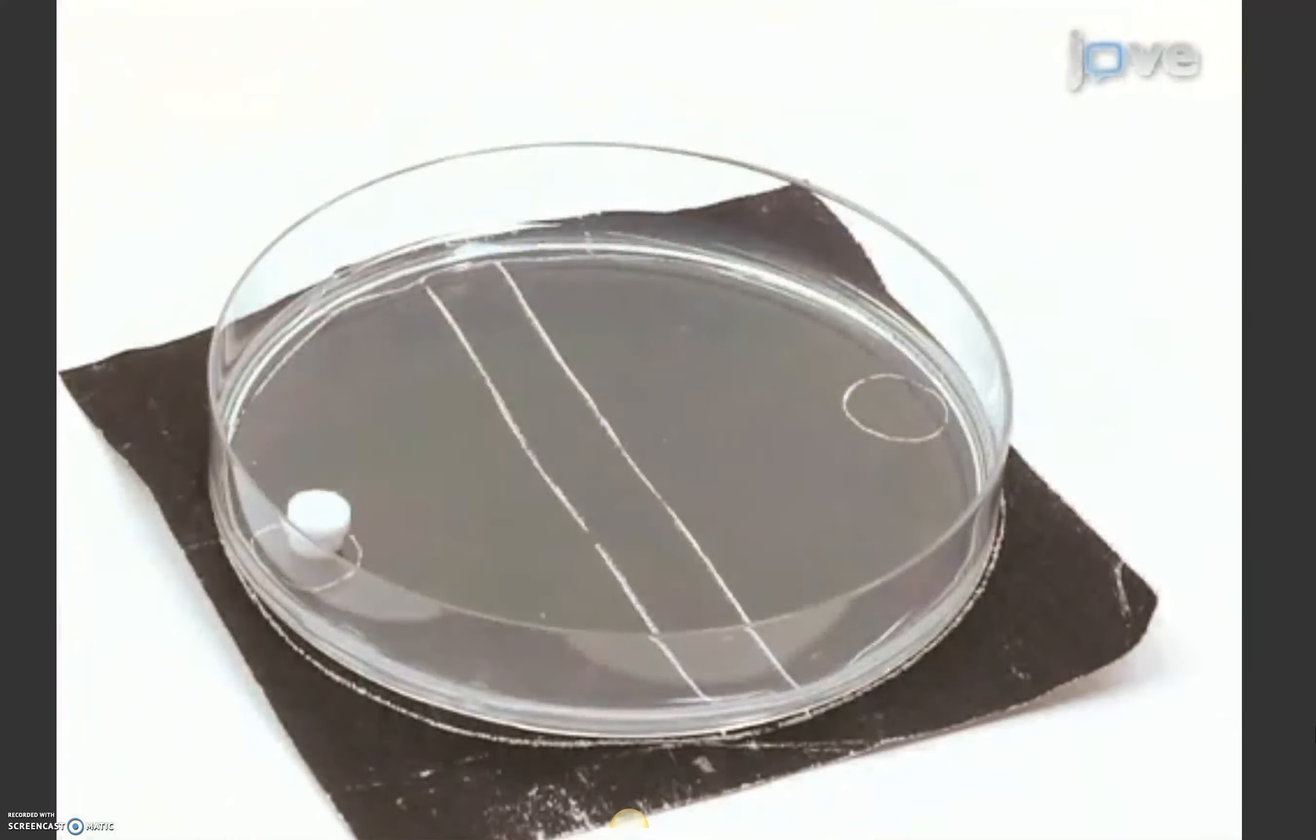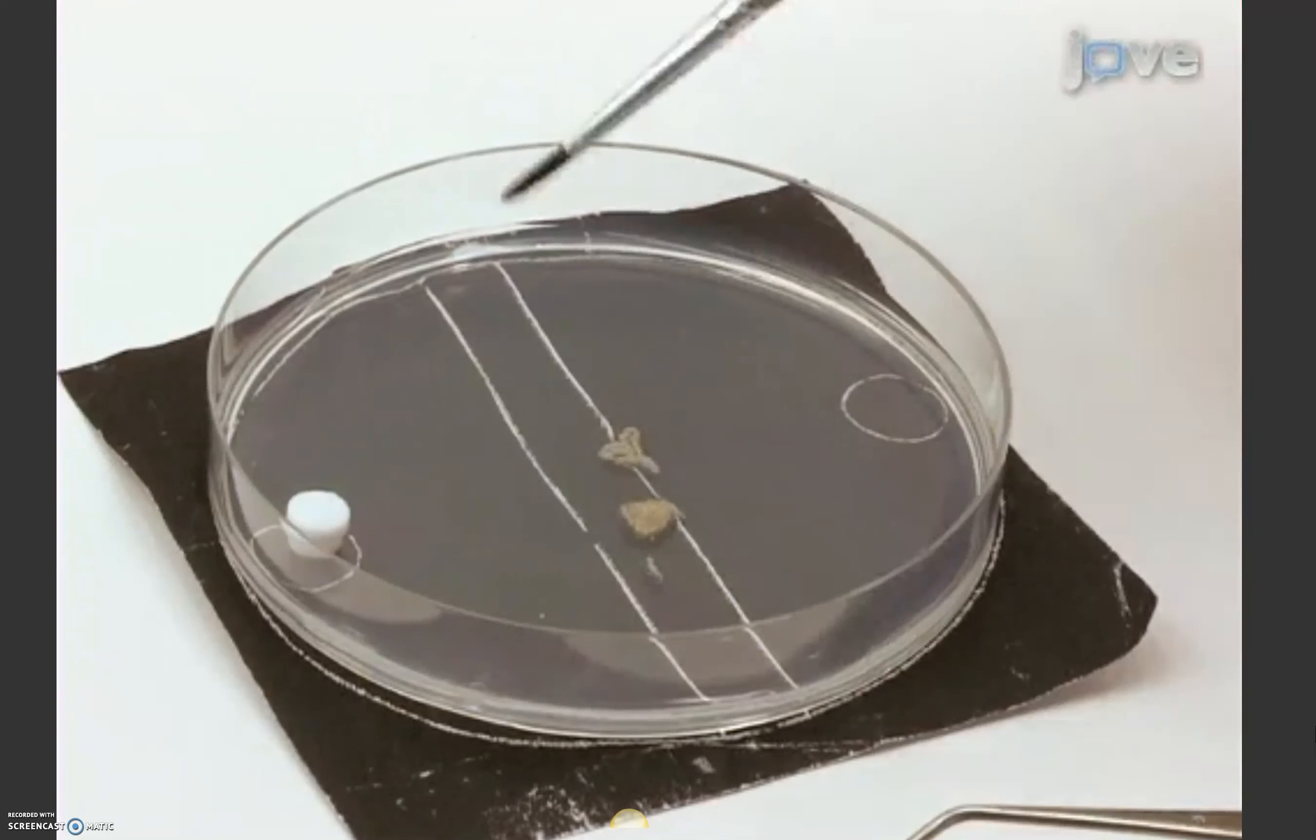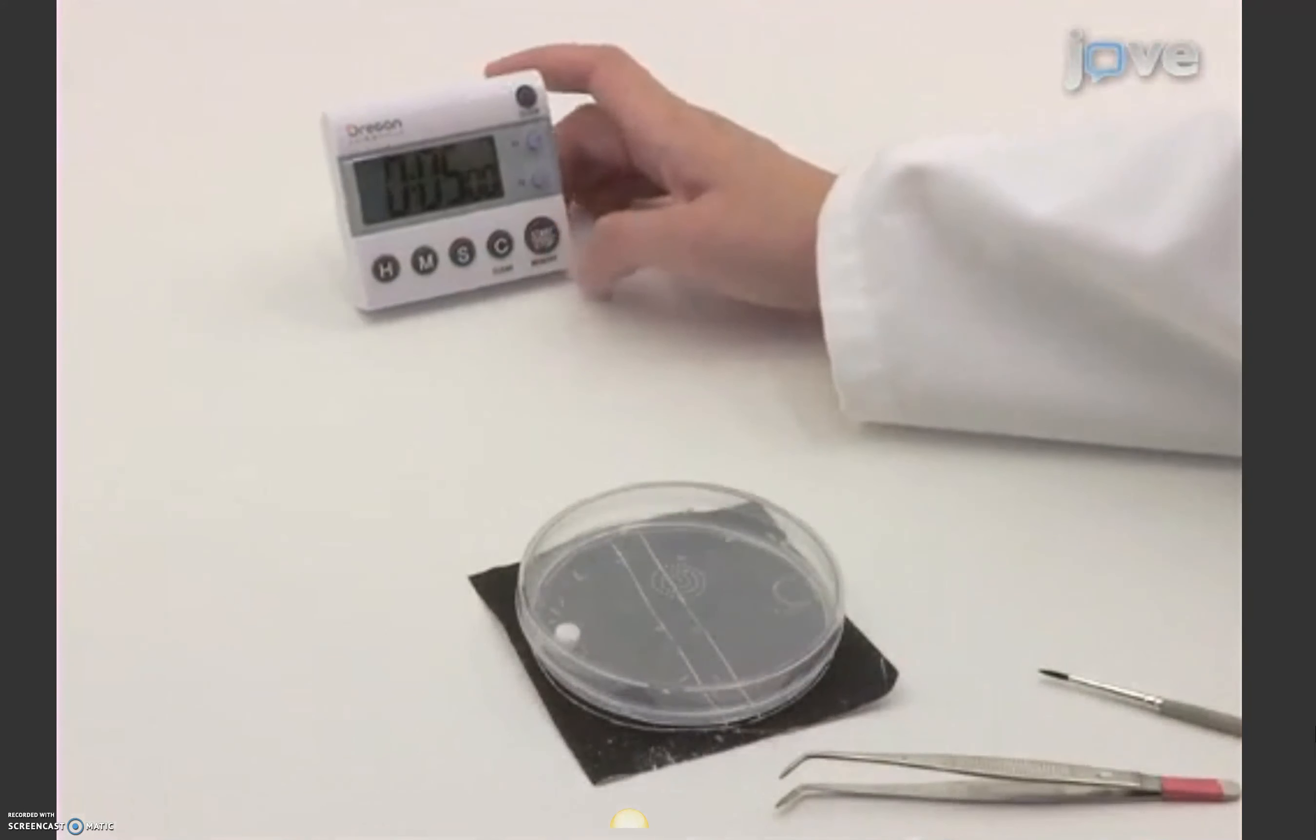Next, load the larvae onto an agarose petri dish with just one stimuli vial on one side. Close the lid and wait for 5 minutes.